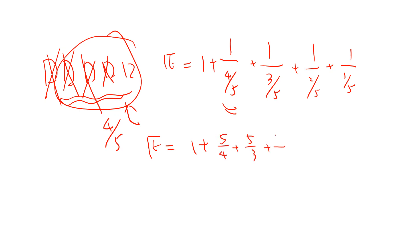One can be written as 5/5, so we have 5 times the sum: 1 over 1, 1 over 2, 1 over 3, 1 over 4, 1 over 5. This is the answer.